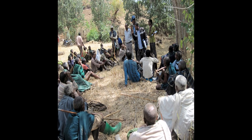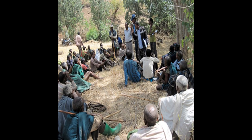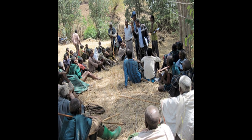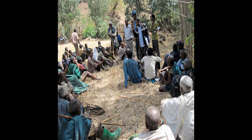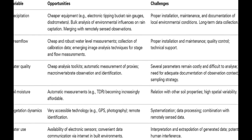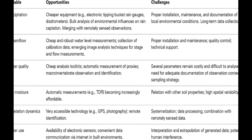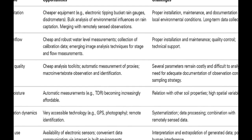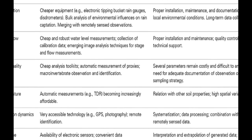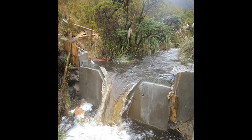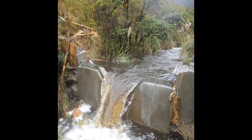While citizen science has existed since the start of scientific practice, recent developments have provided unprecedented opportunities for data collection in a citizen science context. These data can create new hydrological knowledge, especially in relation to process heterogeneity, remote regions, and human impacts on the water cycle.